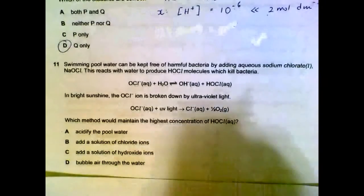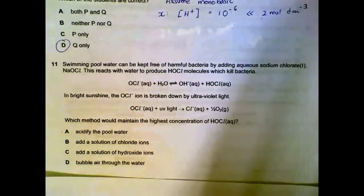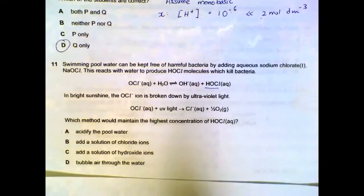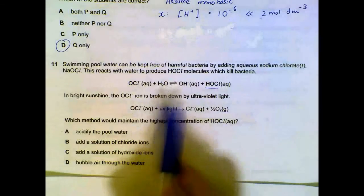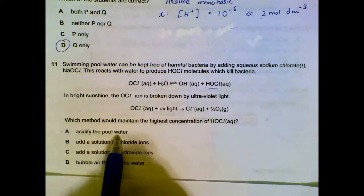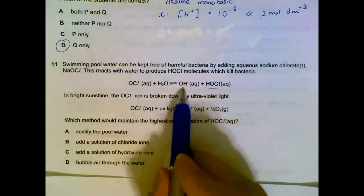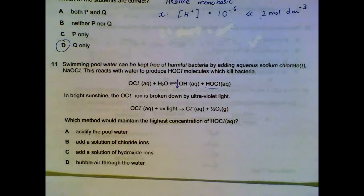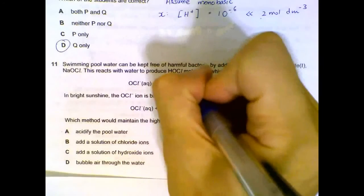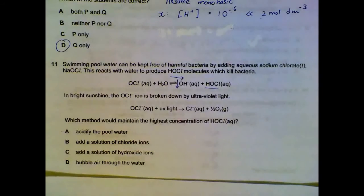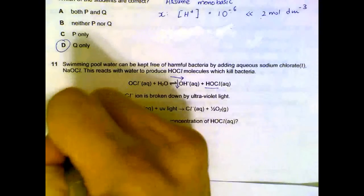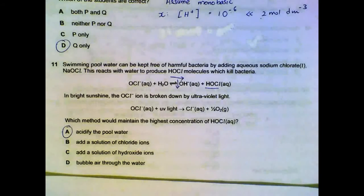Number 11. How can we maintain the highest concentration of HOCl which is in this equilibrium here? So we look at the conditions. Acidify pool water. If we acidify the pool water, the OH⁻ will be neutralized and they will drop, and the equilibrium will shift to the right to compensate for the drop in OH⁻, causing HOCl to increase. So A is a feasible way to increase the concentration of HOCl.